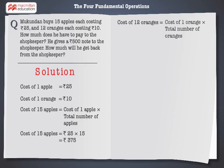Similarly, we have to find out the cost of 12 oranges. The cost of 12 oranges is equal to the cost of one orange multiplied by the total number of oranges. Hence, the cost of 12 oranges is equal to rupees 10 multiplied by 12, which is equal to rupees 120.